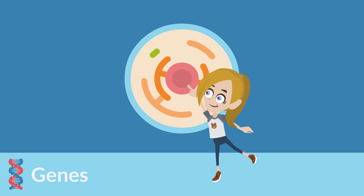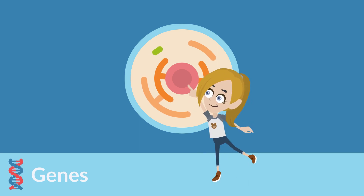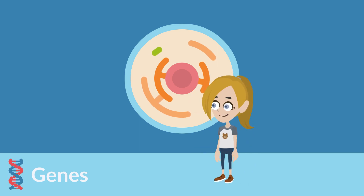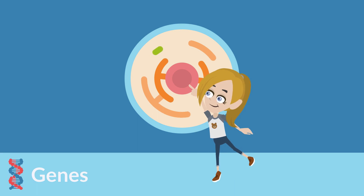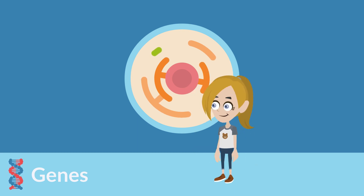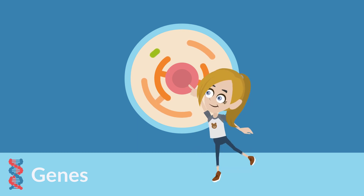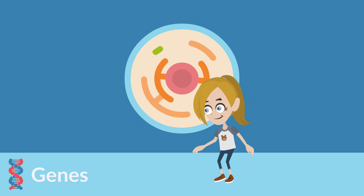Cells are made up of smaller components, each with a specific function that helps the cell perform its job. One of these components is the nucleus. The nucleus is the cell's command center — it sends instructions to the cell, telling it how to behave.